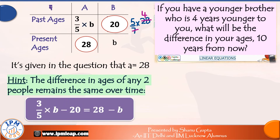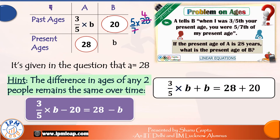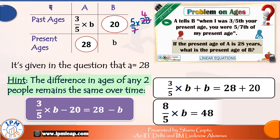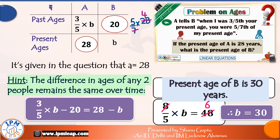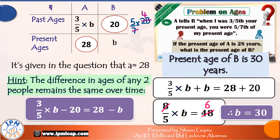So, past age of A minus past age of B, which is (3/5)B minus 20, is equal to present age of A minus present age of B, which is 28 minus B. Rearranging the terms of this equation, we get (3/5)B plus B is equal to 28 plus 20. Eight-by-five B is equal to 48. Therefore, B is equal to 30. That's our answer. The present age of B is 30 years.